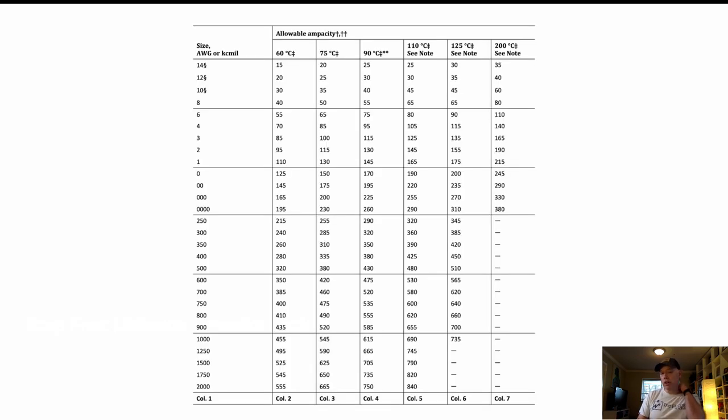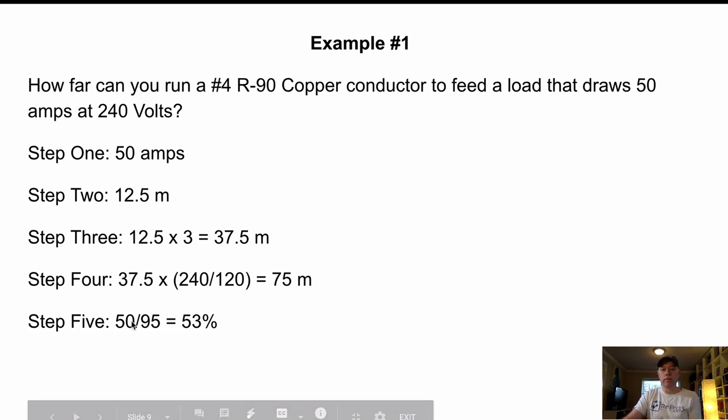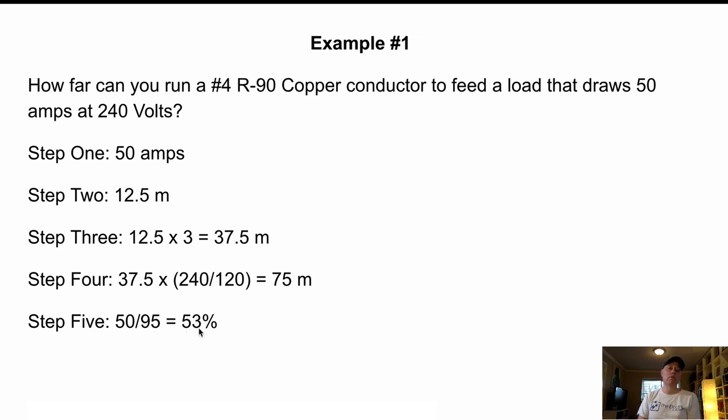Distance correction factor, what we're going to do is we're going to determine what size our cable is good for. So we're using, I'm using table two right now off out of the CEC. So this example, he said, number four. So we've got number four right here and our 90. So we see that our 90 number four is good up to 95 amps. Okay. So it's good for 95 amps, but we're only putting 50 amps on it. So if I go 50 divided by 95, I end up with 53%. We're only using 53% of the capacity of that wire, which allows us to be able to push a little further than we normally would be able to.